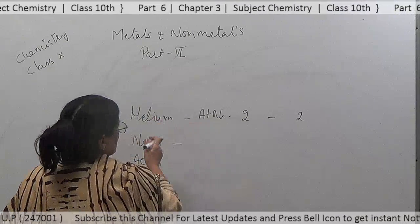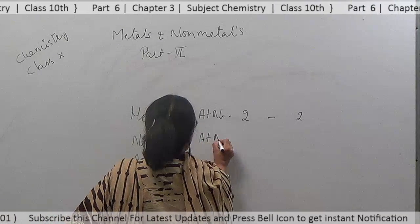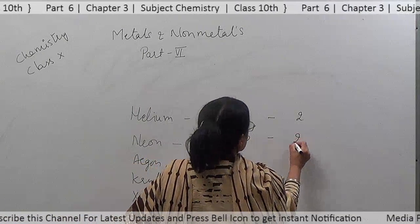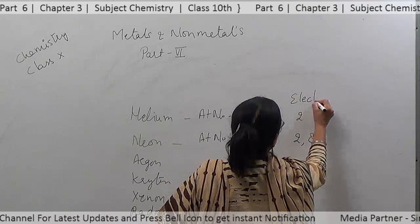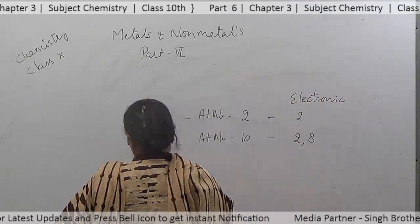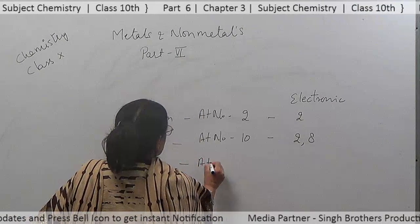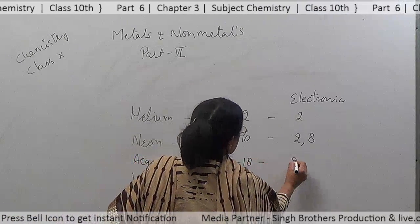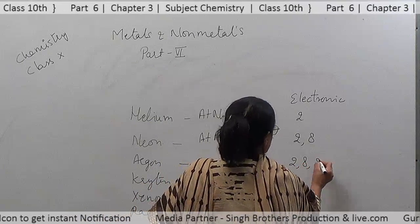Helium has atomic number 2. Neon has atomic number 10, so its electronic configuration is 2, 8. Argon has atomic number 18 and electronic configuration 2, 8, 8.